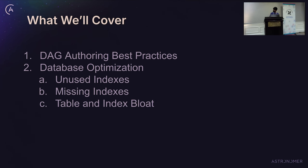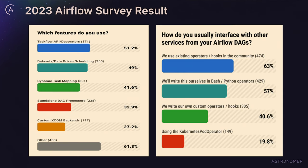In the Airflow Survey 2023, two questions were asked of users. Which feature do users use from Airflow? The top answer was the Taskflow API. The second question was about how people interface with DAGs, and the answer was the Python operator. Both answers give us a sense that many users write lots of Python code in their DAG files, which gives both opportunity and risk to DAG authors to optimize or de-optimize their Airflow DAGs.